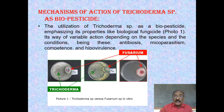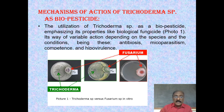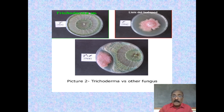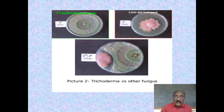The mechanism of action of Trichoderma species as a biofungicide involves variable modes of action depending on the species and conditions, including antibiosis, mycoparasitism, competition, and hypovirulence. Here you can see the inhibition of the pathogenic fungus by Trichoderma through the secretion of specific enzymes like cellulases and chitinases, which inhibit the growth of the pathogenic fungus.